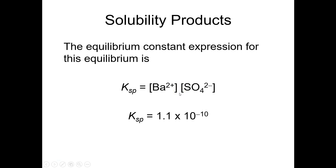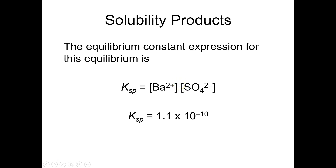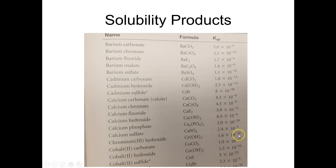Here's how these KSP values actually appear — this is Appendix D3 from the back of your book. For various relatively insoluble compounds, it gives the name, the formula, and the KSP value. You can see they range from about 2.4 × 10⁻⁵ on the high end down to things like 1.6 × 10⁻³⁰ on the low end, so there's a wide range of KSP values.